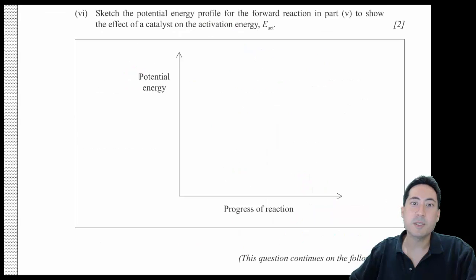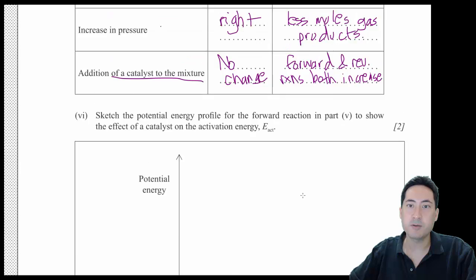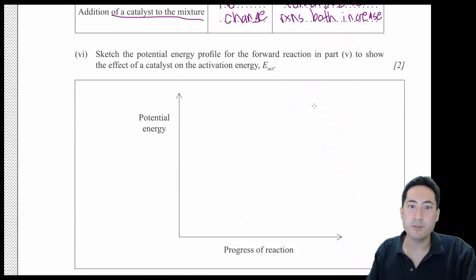Let's sketch the potential energy profile for the forward reaction in part five to show the effect of the catalyst on the activation energy. So there's potential energy and progress of reaction. It's exothermic. So you are getting more heat released and more stable products. So there's high energy reactants. And then you have your activation energy and it releases energy here.